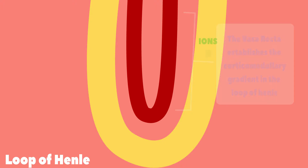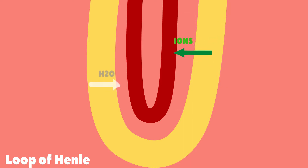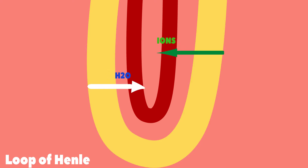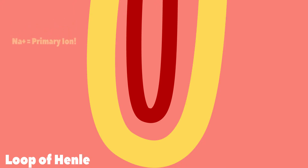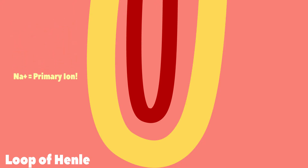This gradient is built primarily through the active transport of ions in the ascending limb of the loop of Henle, and the diffusion of water in the descending limb of the loop of Henle. For simplicity, I'm going to show the active transport of the primary ion involved in this corticomedullary gradient, which is sodium. There are, however, other solutes that contribute to the gradient as well.